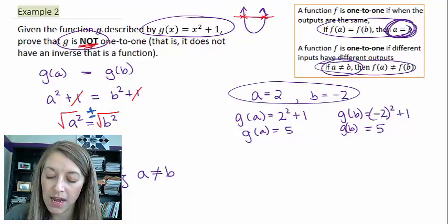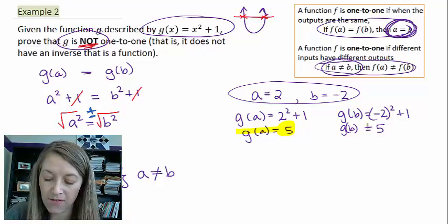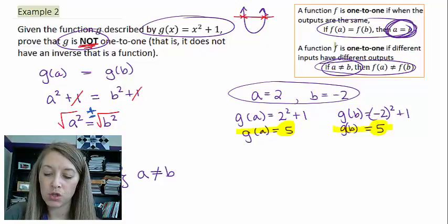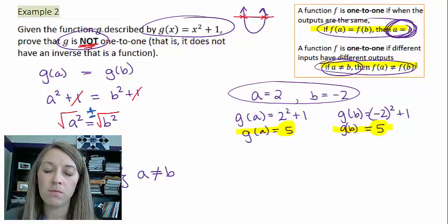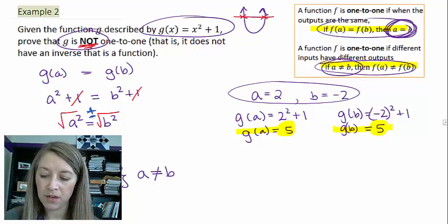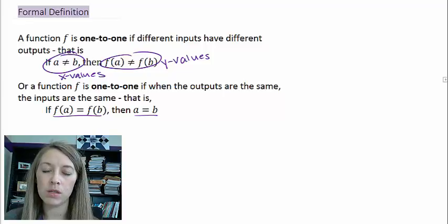And so, we have just proven the opposite is not true. We have shown that a is not equal to b, but in fact, g of a, which is a 5 value, is equivalent to g of b, which is a 5 value. So, we've proved that this one is not true by using both of these here. Now, you don't have to do both of them on your homework, but you just need to be familiar with how both of those work. And so, this video summarizes up the way to use a formal definition of the one-to-one function to prove something is or isn't a one-to-one function.